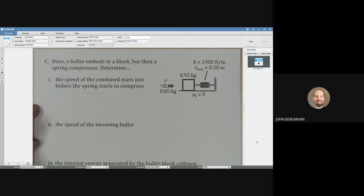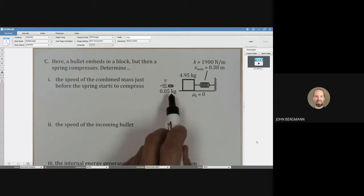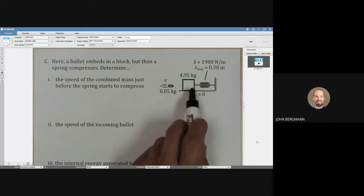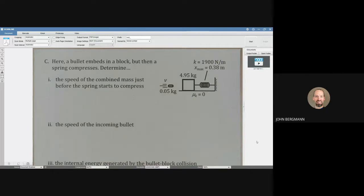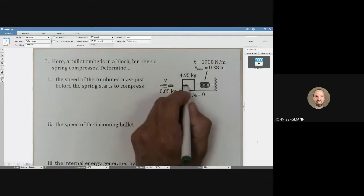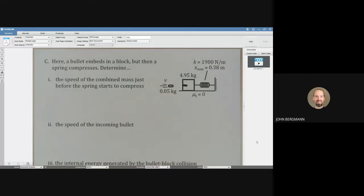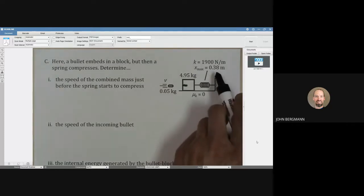So let's try another example. Here we have a bullet that is incoming, and we have a mass that is connected to a spring. So the bullet slams into the block, just like that, and that compresses the spring a distance of 0.38 meters, and there's our spring constant.